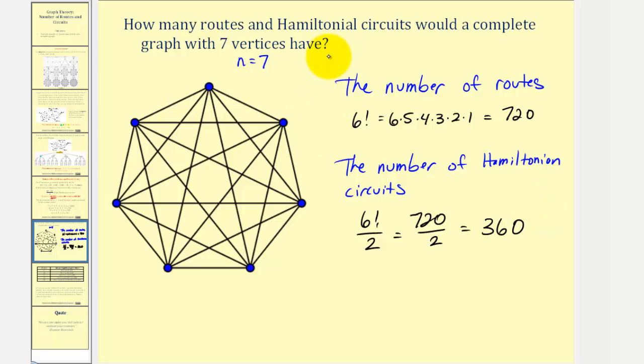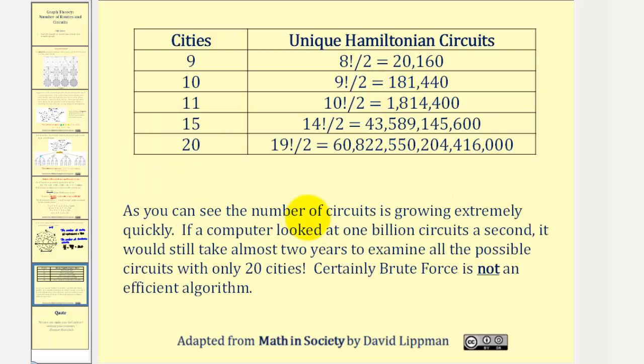And in our study of graph theory, we're going to be more concerned about Hamiltonian circuits, rather than routes. And as you can see from this table, the number of circuits is growing extremely quickly, as the number of cities, or vertices, increase.